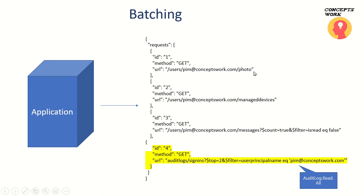The first query retrieves the photo of this particular user. The second retrieves the list of managed devices — no advanced query parameters are applied to the first two requests. The third query targets the user at paymathere@conceptswork.com, reads messages, and filters for the count of unread messages. The fourth navigates to audit logs, checks sign-ins specifically, and returns only the first two results where the UPN is paymathere@conceptswork.com — meaning the last two sign-in attempts for this user.